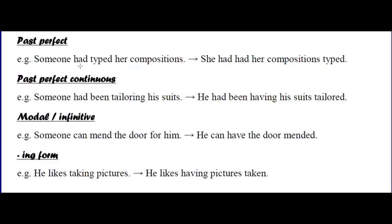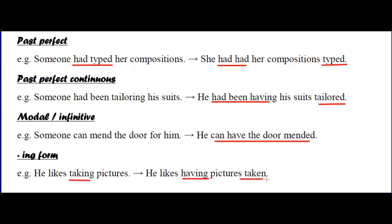Past perfect causative: 'Someone had typed her composition' → 'She had had her composition typed.' 'Someone had been tailoring his suits' → 'He had been having his suits tailored.' Modal causative: 'Someone can mend the door for him' → 'He can have the door mended.' 'He likes taking pictures' → 'He likes having pictures taken.'